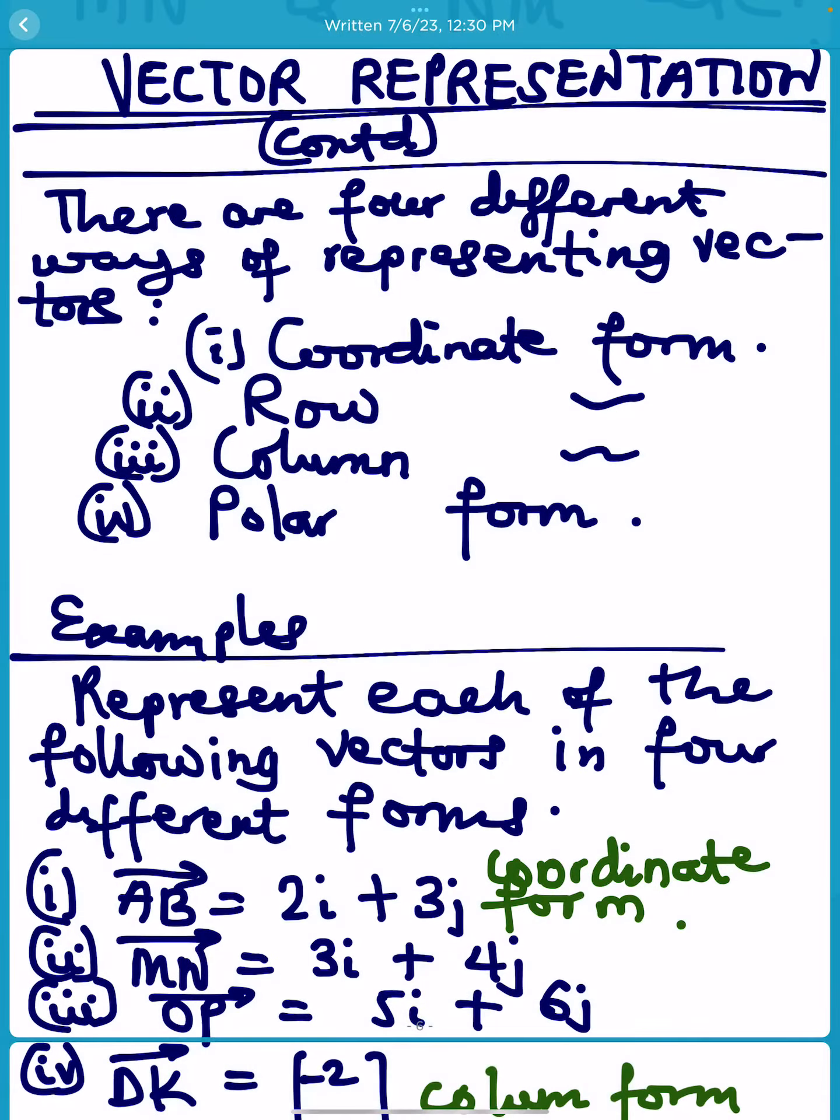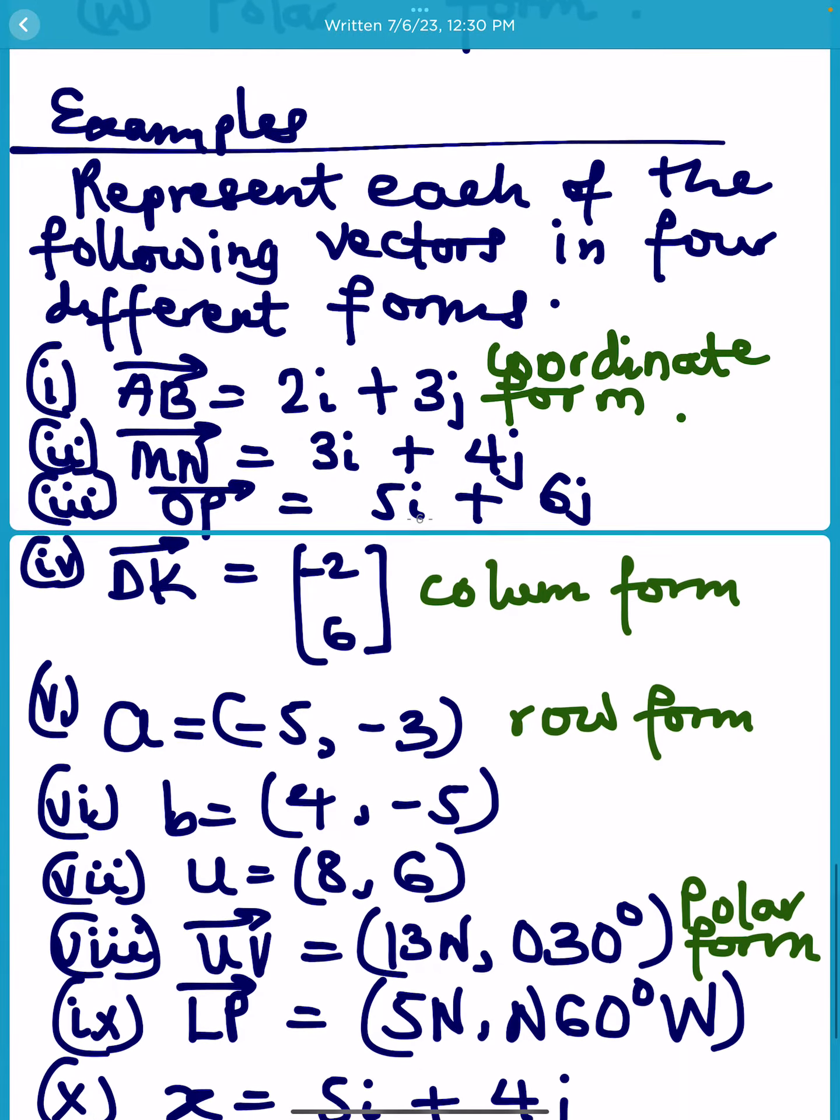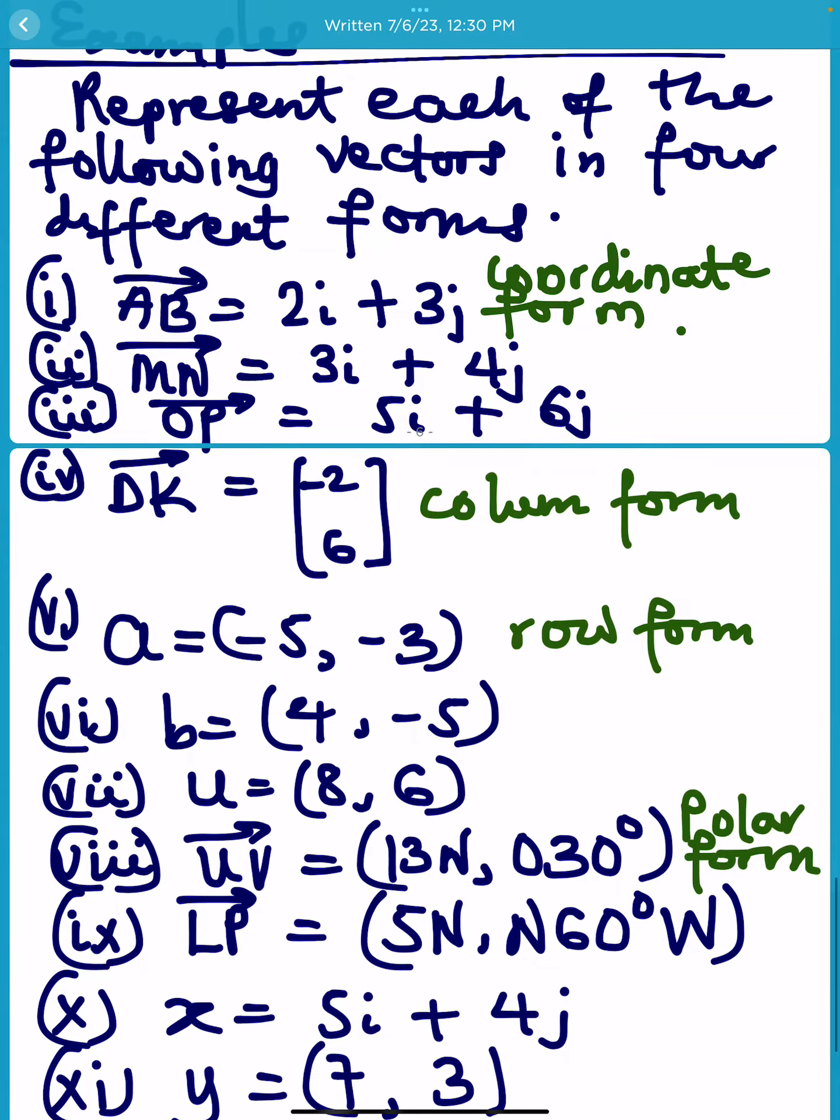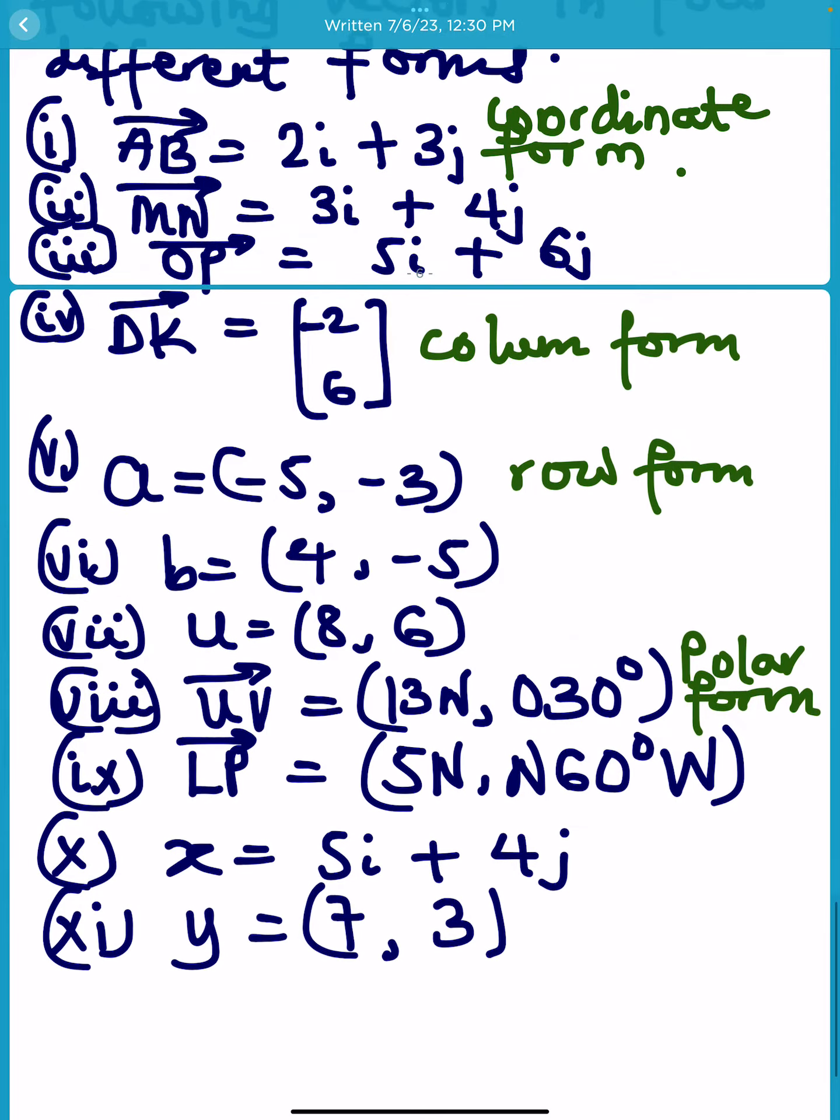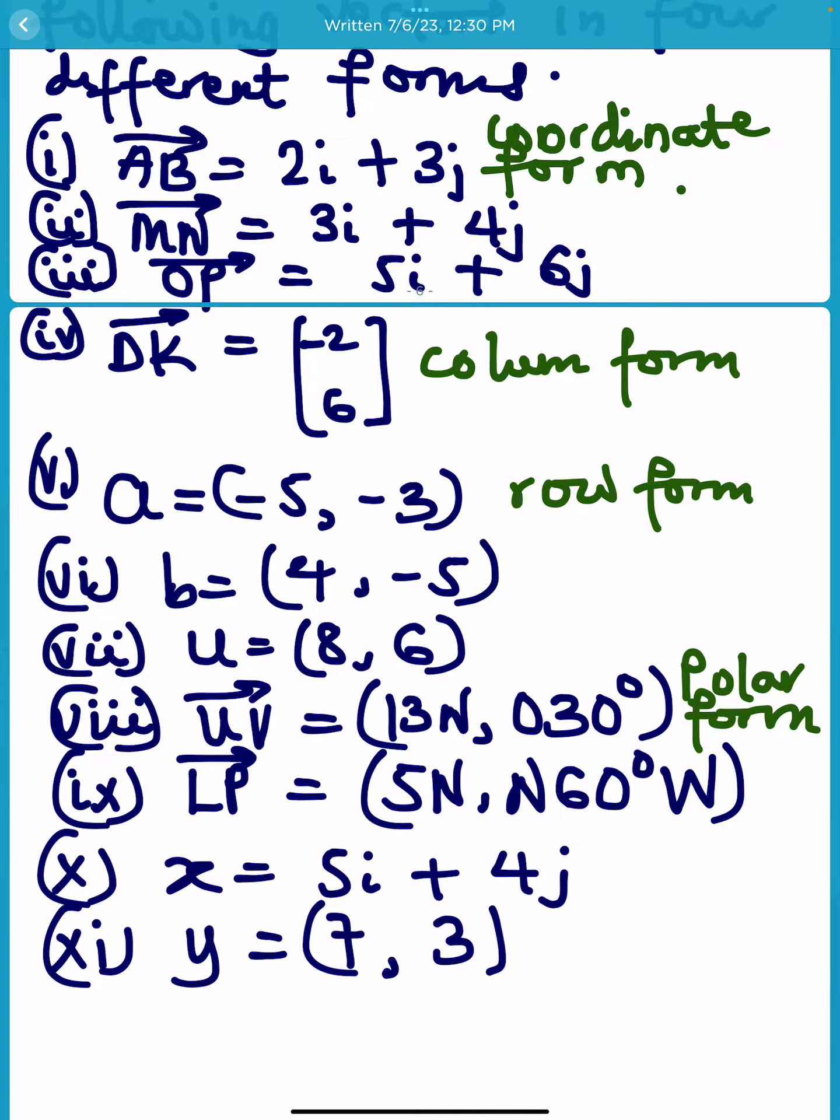So, those are the four different ways of representing vectors. We will now explain how, when a vector is given in one form, we can express it in another form. For example...